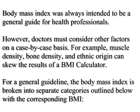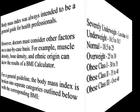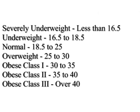For a general guideline, the Body Mass Index is broken into separate categories: severely underweight is less than 16.5; underweight is 16.5 to 18.5; normal is 18.5 to 25; overweight is 25 to 30; obese class 1 is 30 to 35; obese class 2 is 35 to 40; and obese class 3 is over 40.